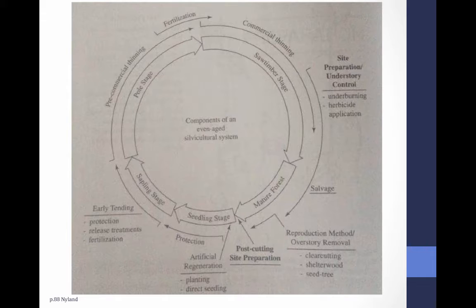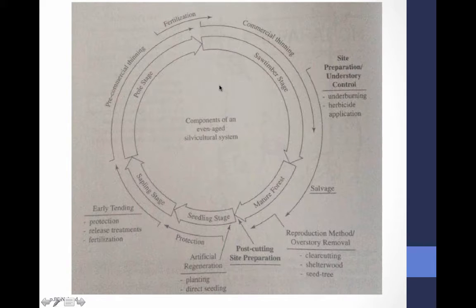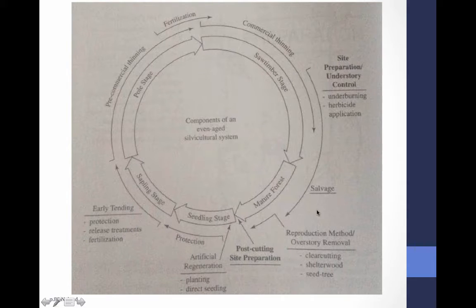Early tending can also include herbicide and fertilization — fertilization is something we'll touch on when we read the southern silvicultural case studies. We then move into later stages when we have larger diameter trees, where we can do thinning and also site prep for the understory, which can include underburning, herbicide, and other methods. Finally we have our mature forest and overstory removal — clear cutting, shelterwood, or seed trees.